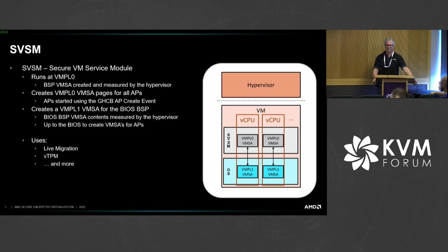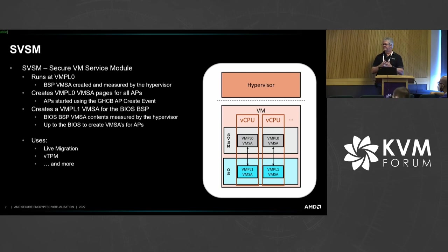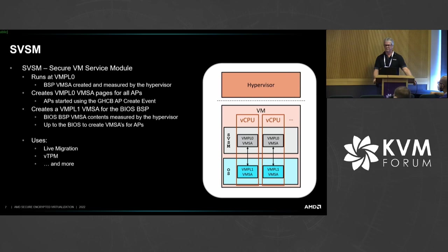We only encrypt and measure the BSP. This should make it a little easier for multi-vCPU guests. You don't have to know how many vCPUs the guest is starting in order to determine your measurements for attestation. We'll have just the one BSP.